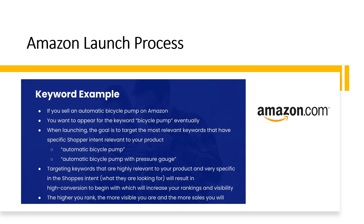Another example might be 'automatic bicycle pump with pressure gauge.' If your product features a pressure gauge, this is a highly relevant search term that a shopper is entering when looking for your product. Targeting keywords that are highly relevant and very specific to the shopper's intent will result in high conversion to begin with, which will increase your rankings and your visibility. The higher you rank, the more visible you are, and the more sales you will generate.